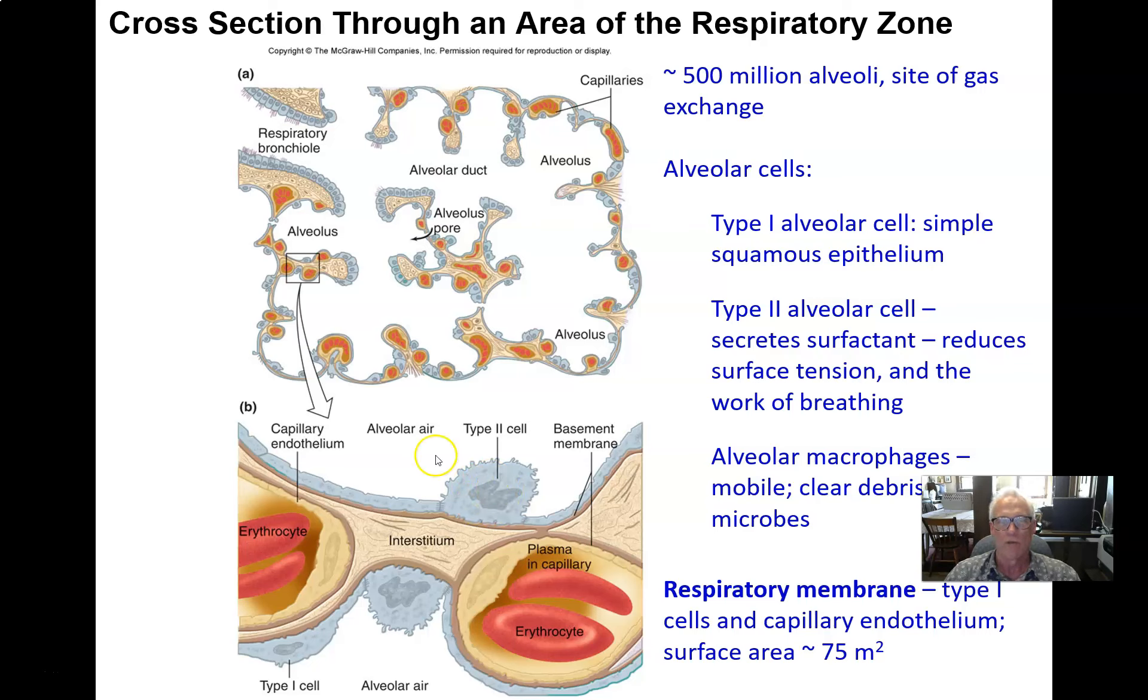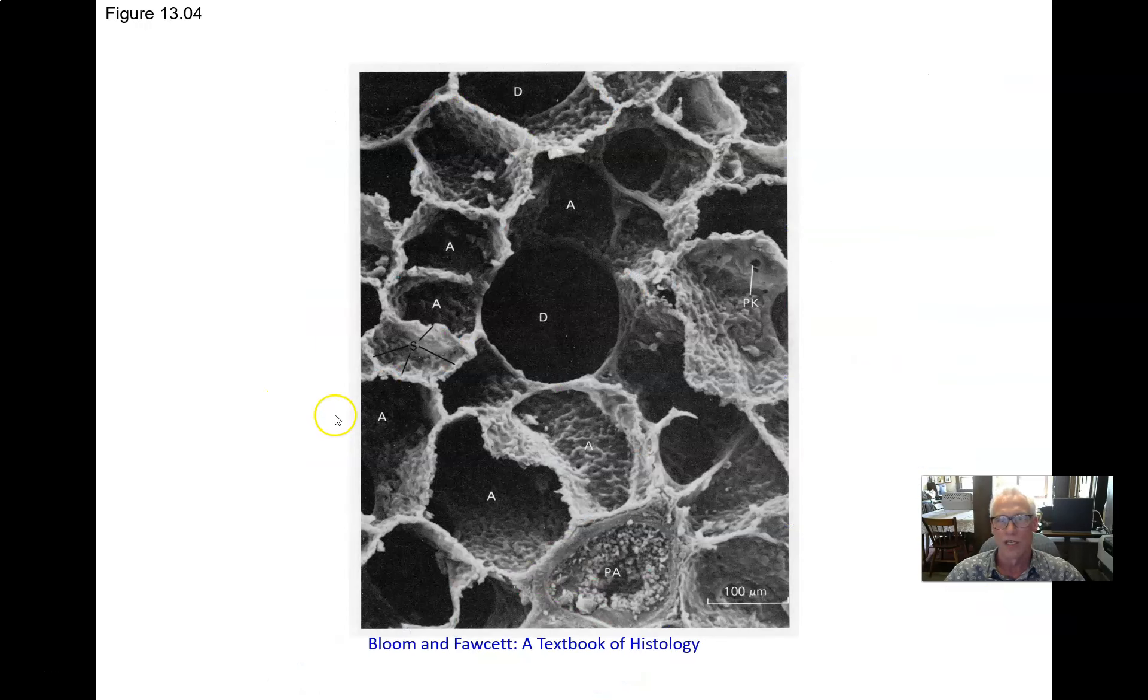And finally, there's some alveolar macrophages in here. Those macrophages will phagocytize any debris or bacteria that do manage to not get stuck to the wall of any mucous membranes all the way down and arrive in an alveolus. The macrophages are freely moving along the surface of the alveolus. They can defend us against those things and keep that alveolus clean for gas exchange.